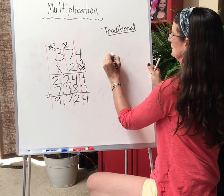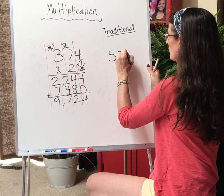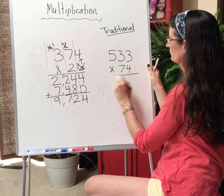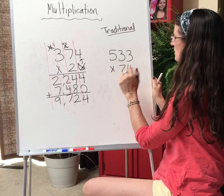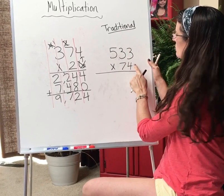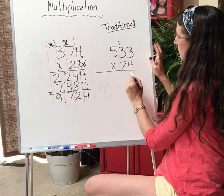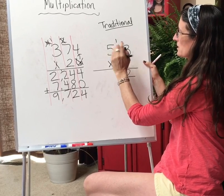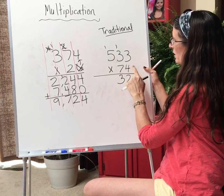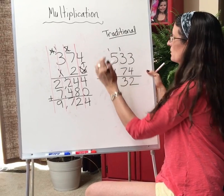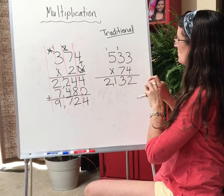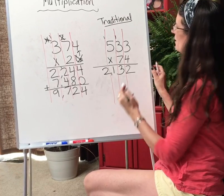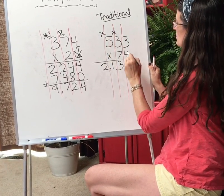We will do 533 times 74. So for now I'm going to pretend that the 7 doesn't even exist — block it out. 4 times 3 is 12, and 1 more is 13. And 4 times 5 is 20, and 1 more is 21. I've kept all of my numbers in their correct columns for place value. So now I've finished with that regrouping up here and I'm done with that 4.